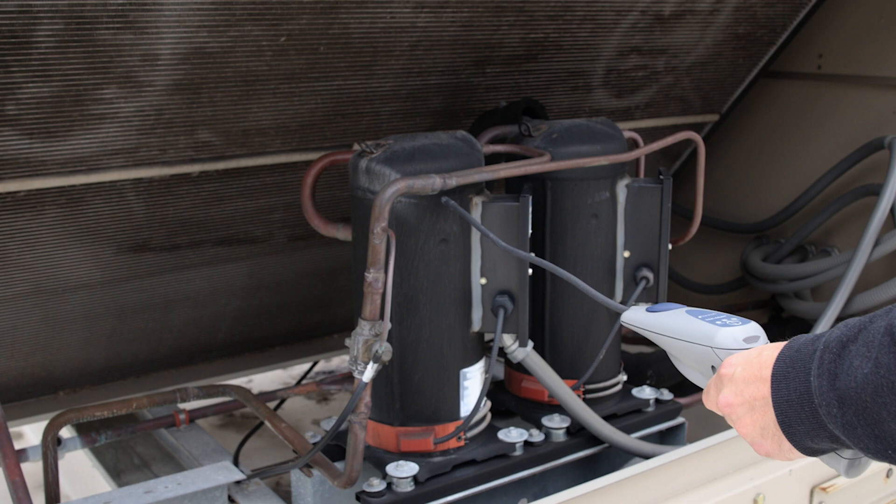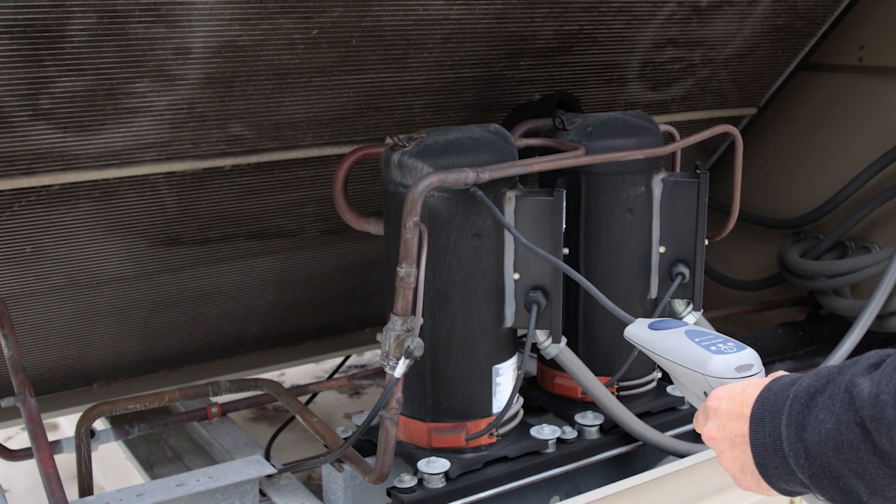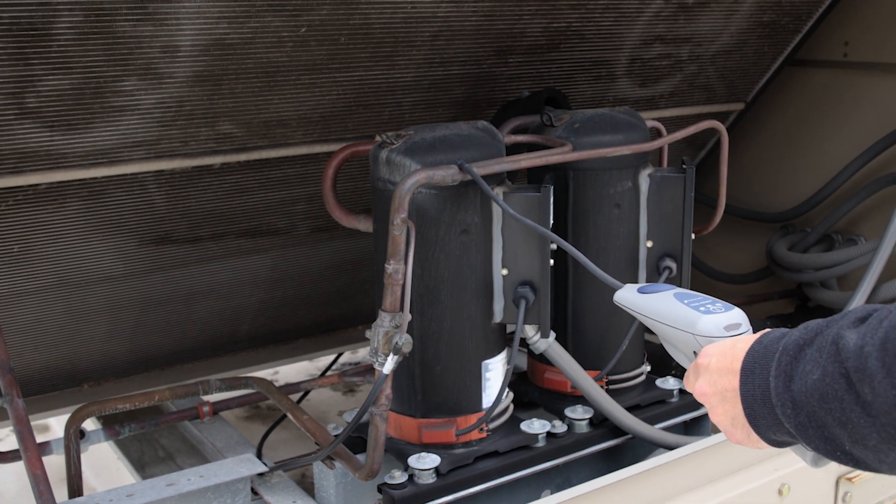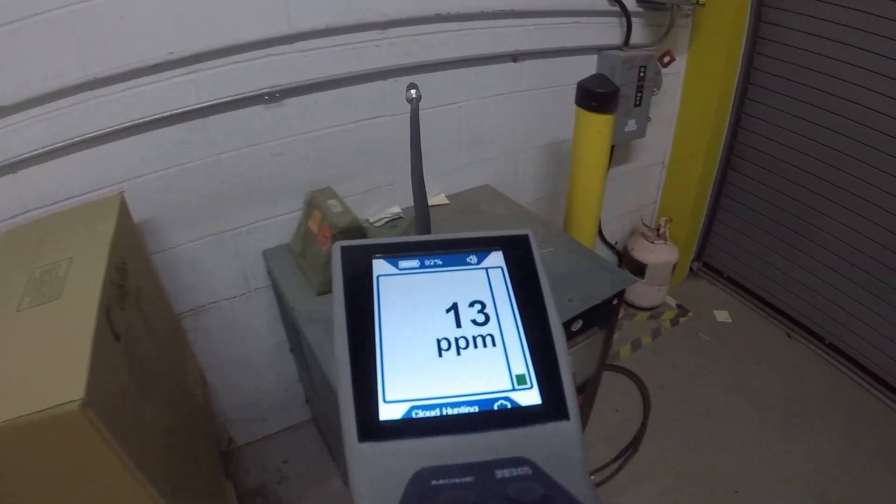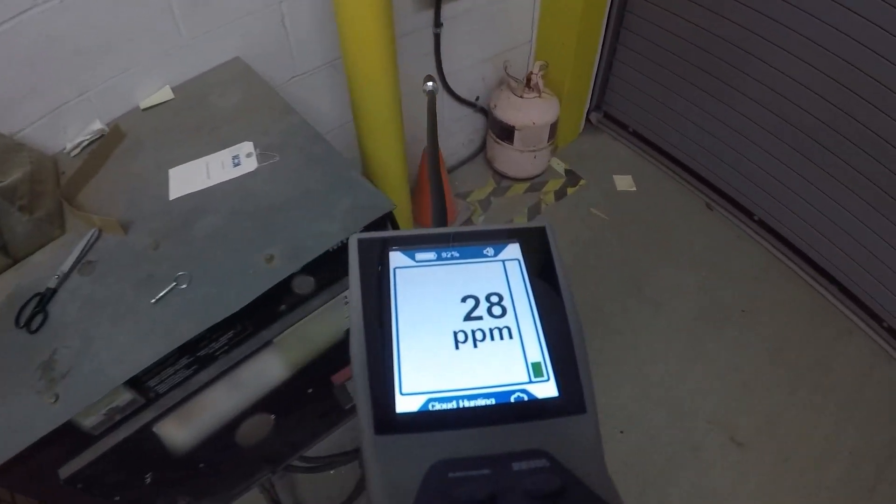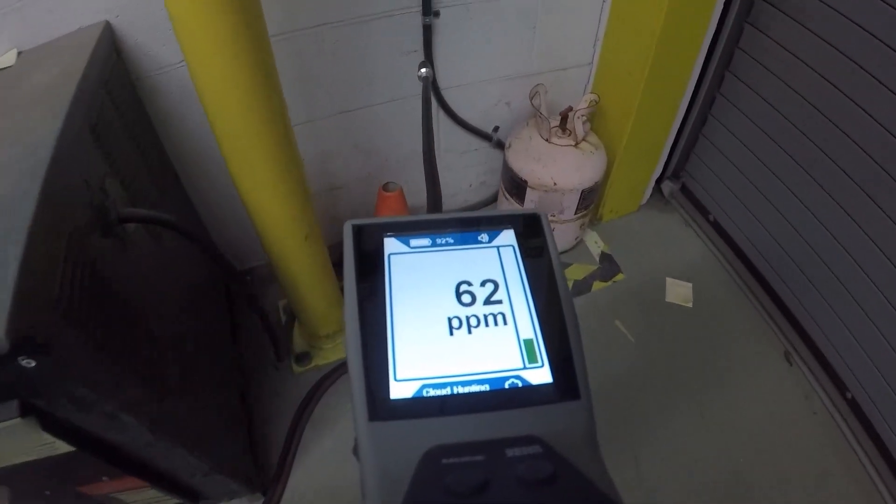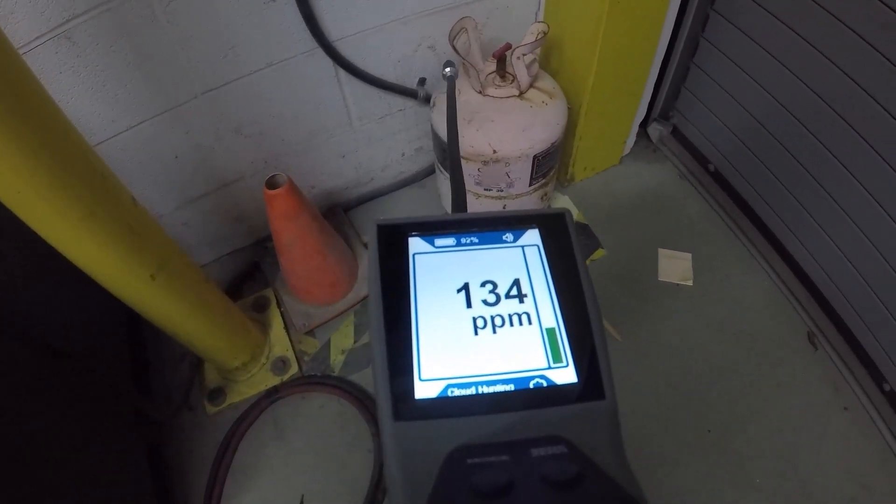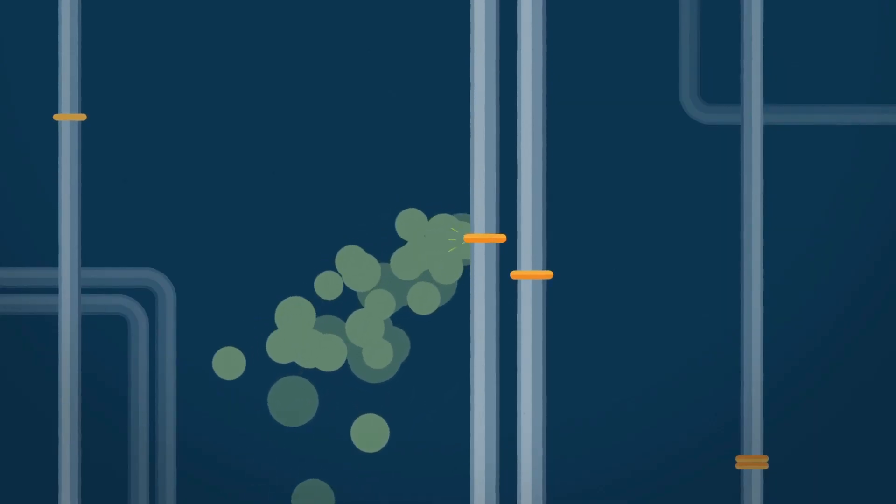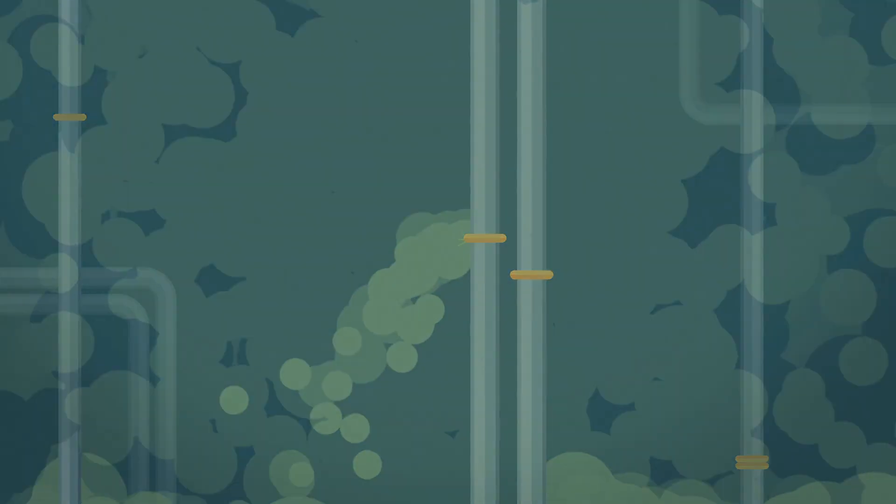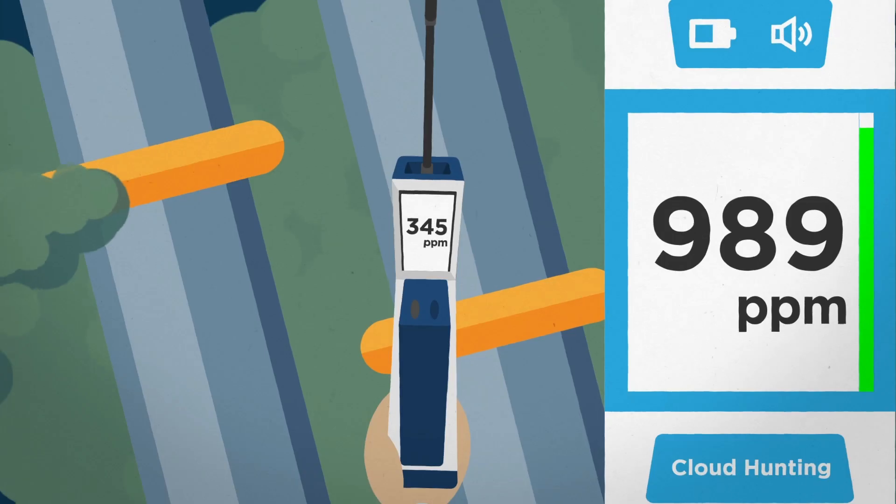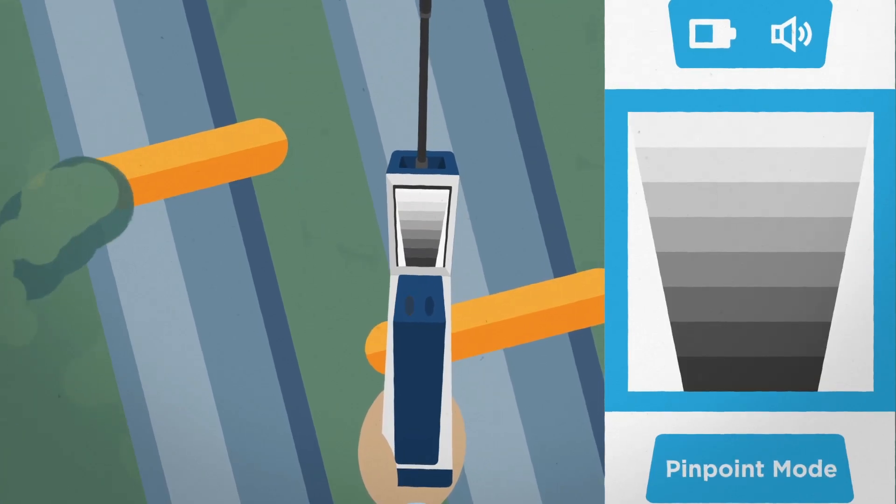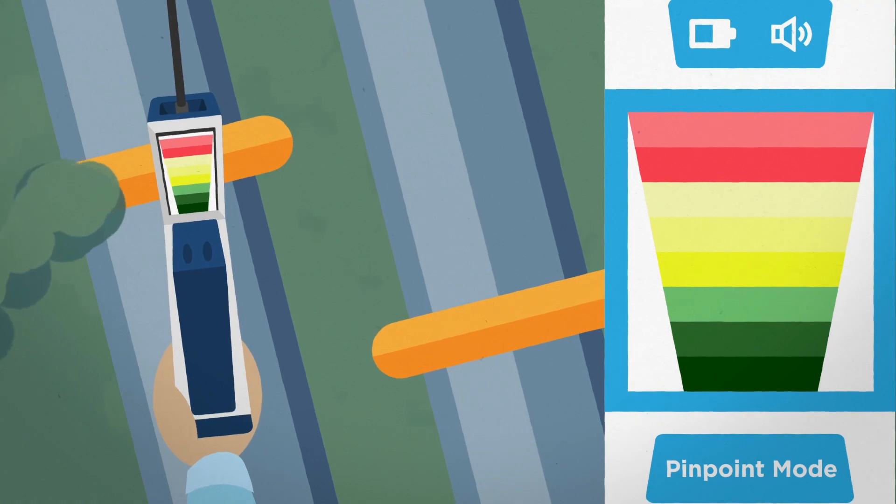While traditional sniffer leak detectors are great for finding most refrigerant leaks, there are some things they can't do. A traditional leak detector pulls in an air sample to identify if refrigerant is present, which means that the system must still have refrigerant leaking out, and there must be refrigerant where the leak detector probe is sampling. If the system is empty, or if you want to leak check a line from a distance, this can create a problem.